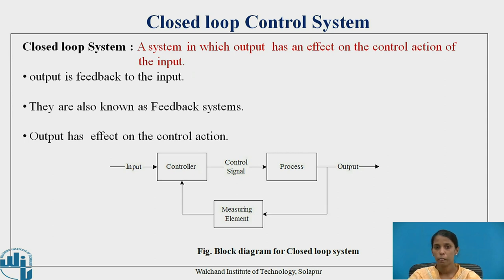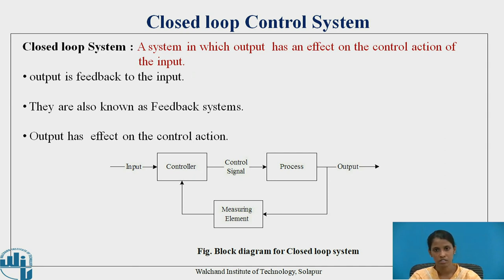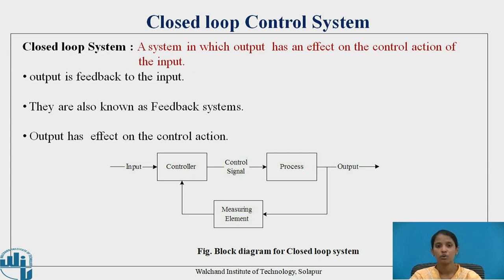The controller acts on the signal and gives the control signal as input to the process or system. As discussed, there are two types of disturbances: internal disturbances formed inside the system, and external disturbances such as environmental factors. The output is fed back so that there is a comparison between the output and the input to achieve the desired output. The measuring element serves as the feedback element.